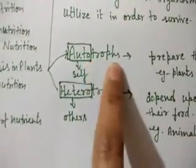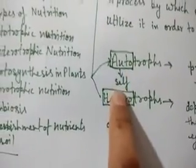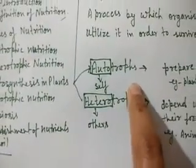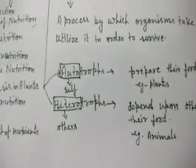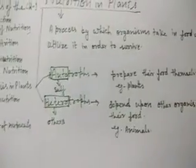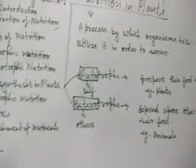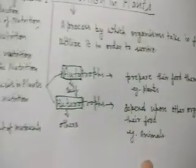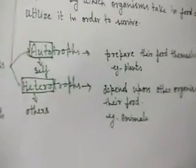There are two types of nutrition: autotrophic nutrition and heterotrophic nutrition. In autotrophic nutrition, 'auto' means self and 'trophs' means nutrition — organisms prepare their food themselves. In heterotrophic nutrition, 'hetero' means other — organisms get their food from other organisms.